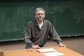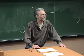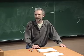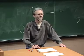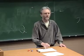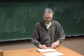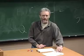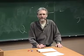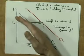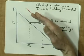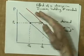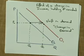It's a change in quantity demanded. We get really picky about language here. A fall in price does not cause an increase in demand — it causes an increase in quantity demanded. An increase in demand shifts the whole curve.